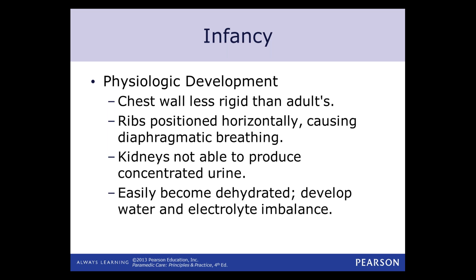Their chest wall is less rigid — they're more cartilaginous and haven't yet had osteocytes and osteoblasts fill in to become fully bony. How the ribs are positioned is also different. The kidneys are just starting to work and aren't in full function yet as they're growing. As they become older children and approach the geriatric population, you'll see that both ends of the age spectrum are very similar — both populations can become very easily dehydrated.